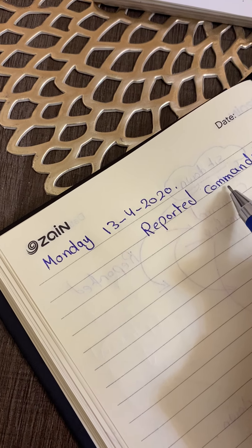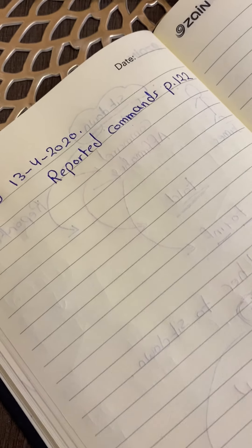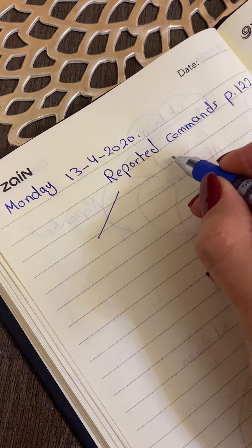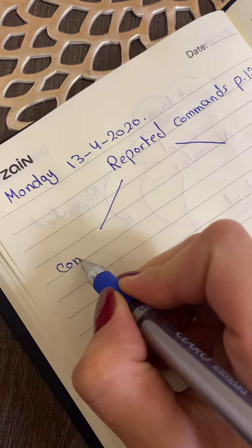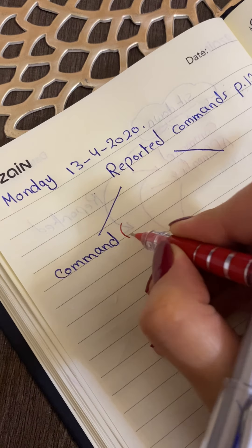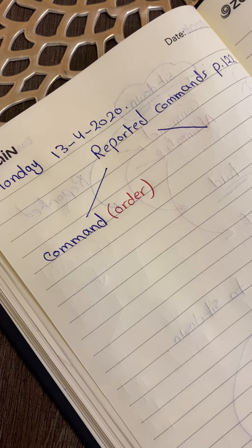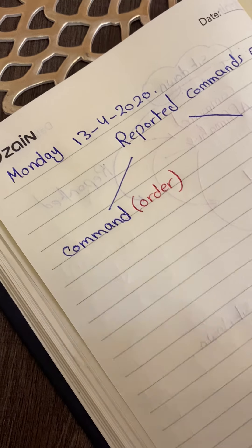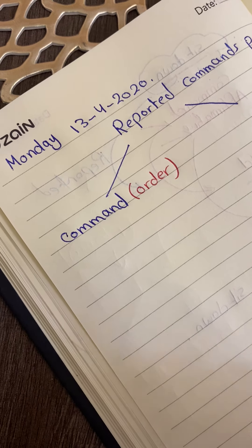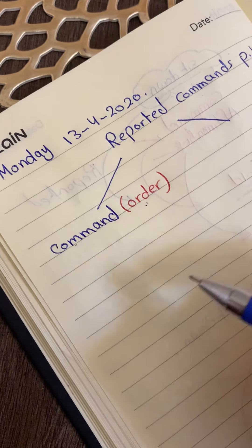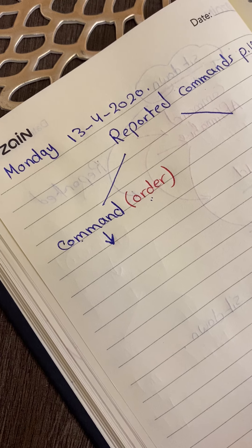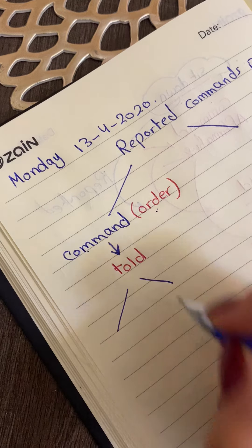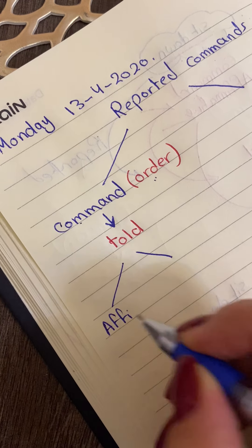We started with reported commands in the previous lesson and today we will complete it. We said that reported commands have two parts: the first one is the command. The command means the order — when someone tells you to do something, like when the teacher says 'sit down', you must sit down. If the sentence is a command, we must use 'told'.